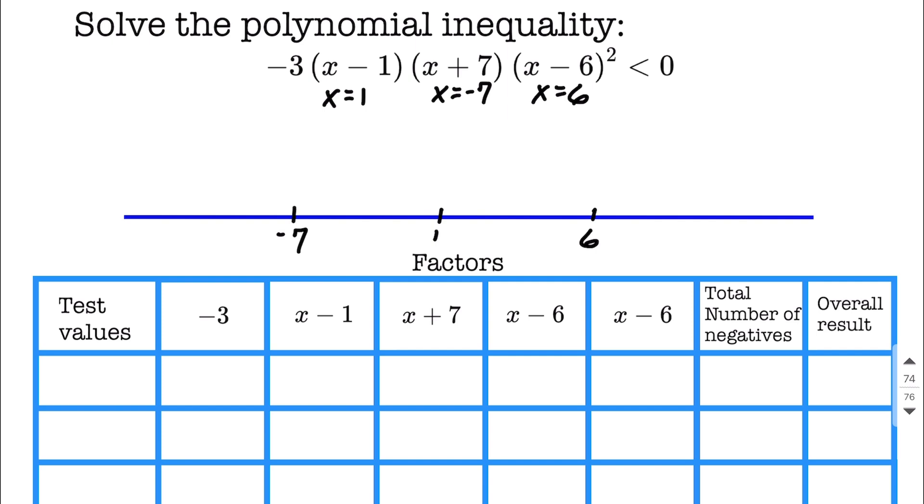From here, what we need to do is pick out one test value in each one of these sections. So I'm going to choose negative 10 fits out here to the left of negative 7. That'll be our first test value that I'll go ahead and place in the table here. Next, you'll notice in our table, I've listed out each one of our factors.